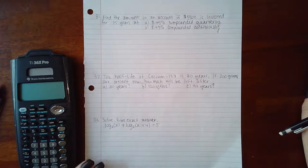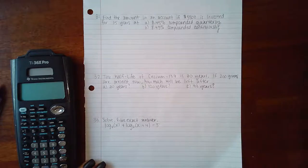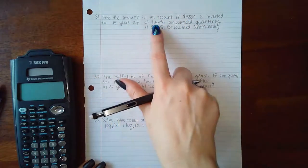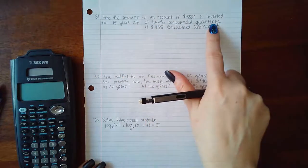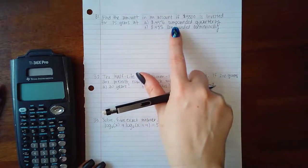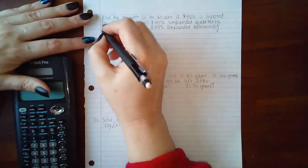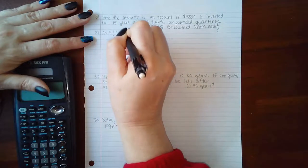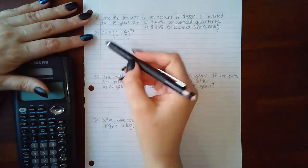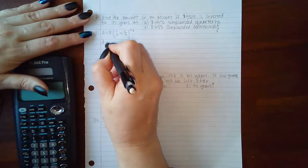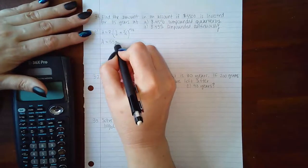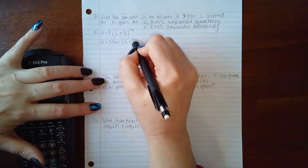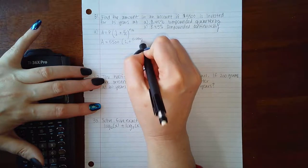Okay, we're going to talk about problems 31 through 33. Problem 31 says find the amount in an account if $5,500 is invested for 15 years at 8.45% compounded quarterly, and then for the second part, 8.45% compounded continuously. If it's compounded quarterly, we need to apply this formula. I'm trying to find the amount in the account, so A is unknown. P is my investment, which is $5,500.